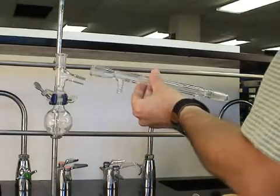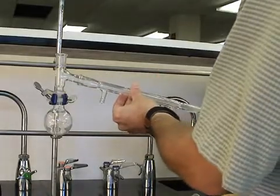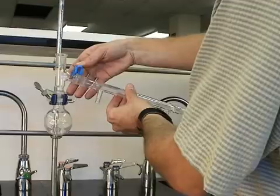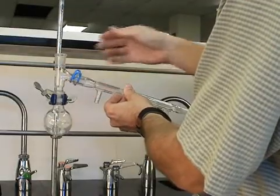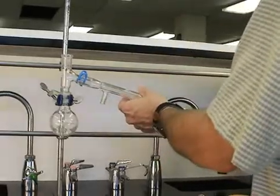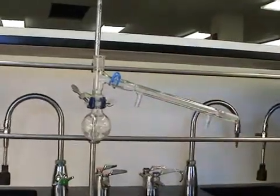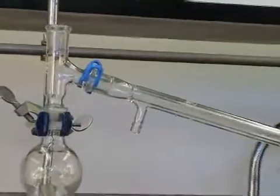We next use a Keck clamp to attach a distillation condenser. This is the smaller of the two condensers in your kit. Make sure you have the Keck clamp positioned properly. There's a large end and small end. And push it on to snap and hold the condenser in place.